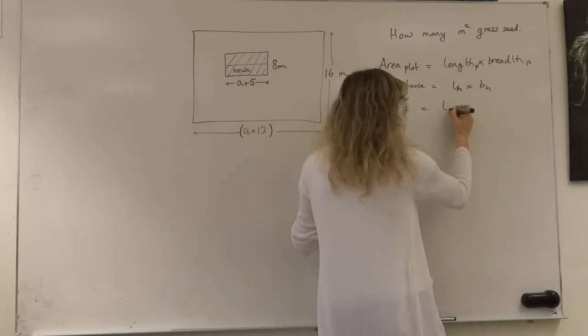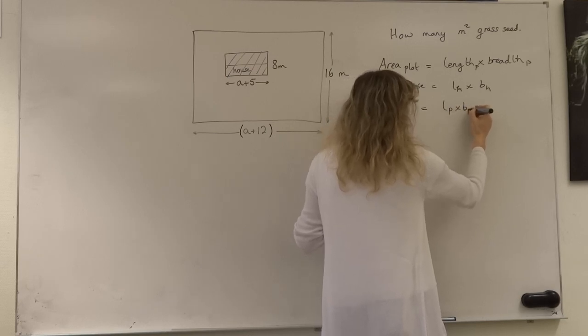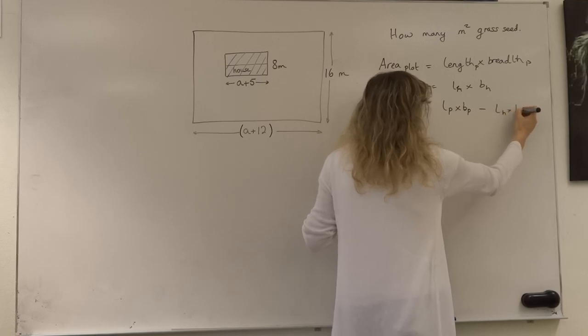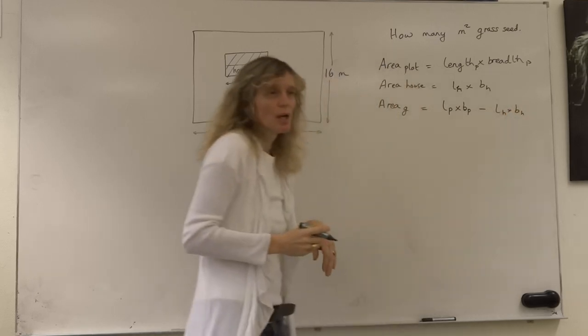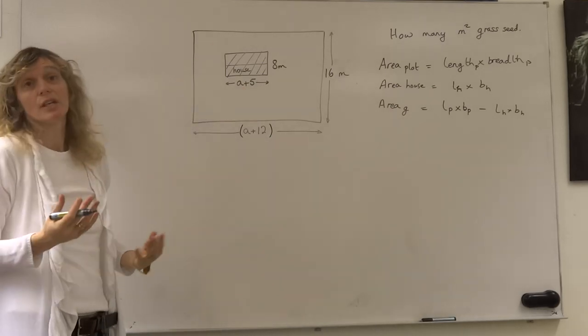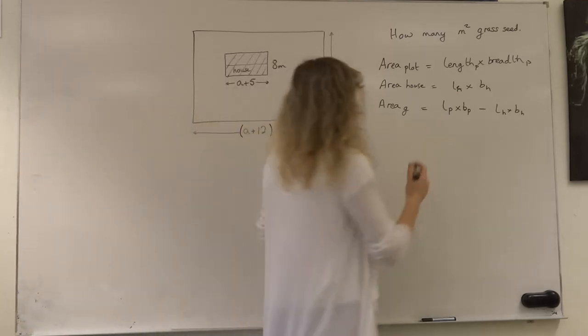The area of the plot minus the area of the house. So we get the length times the breadth of the whole plot minus the length of the house times the breadth of the house, because we're not going to plant grass seed on the roof of our house—or we could have done actually if we wanted to, environmentally, but we're not in this case.